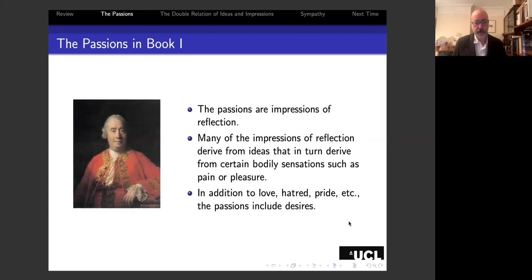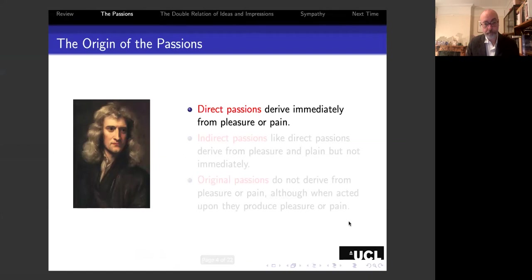In addition to things like love, hatred, pride, and so on, the passions include desires. In Book Two of the Treatise, Hume distinguishes passions according to how precisely they originate.